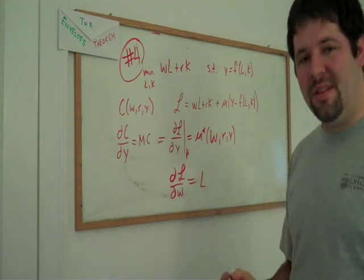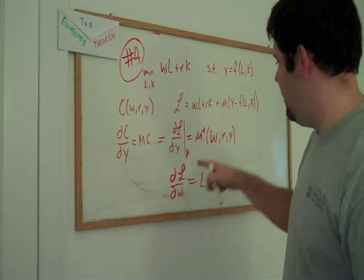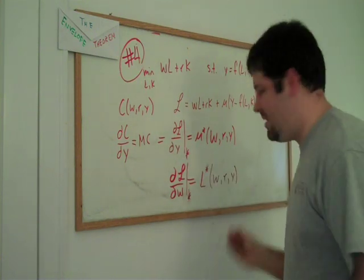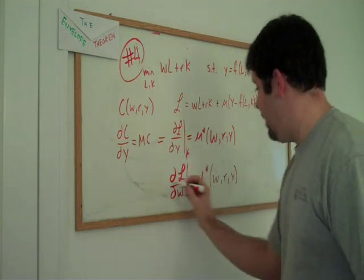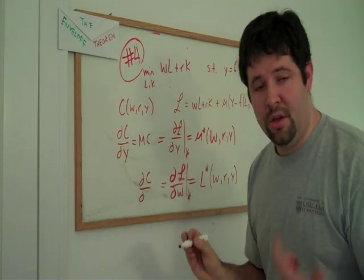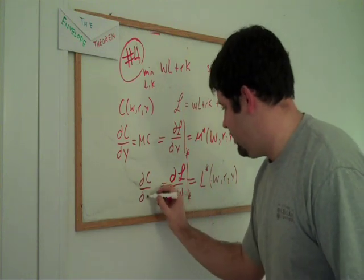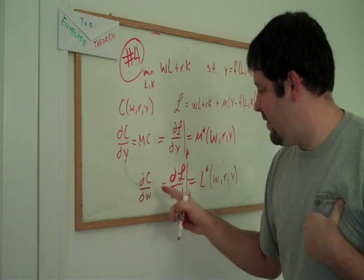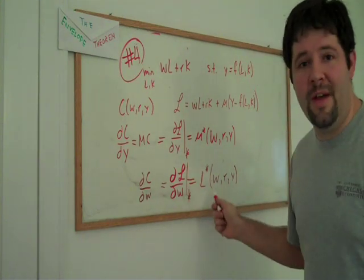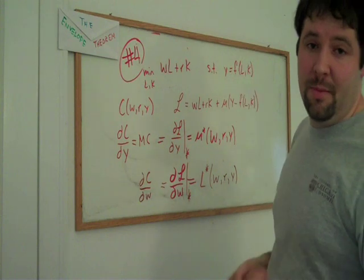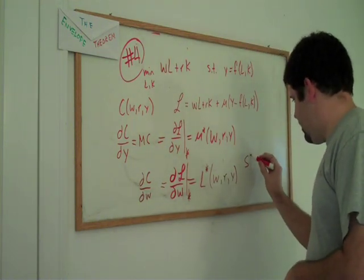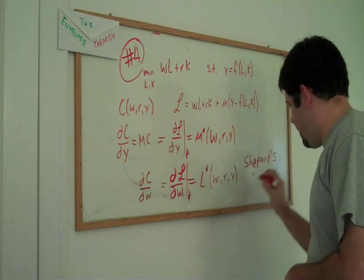Remember that this is the envelope theorem. And the way we use it is we evaluate at the optimum. This is a conditional factor demand. And if we go over here and we see and we connect the equalities that the envelope theorem allows us to connect. We take the derivative of the cost function with respect to the wage. We get our conditional factor demand. We do it with capital as well, just with respect to the rental rate of capital. And this is what's known as Shepard's Lemma.